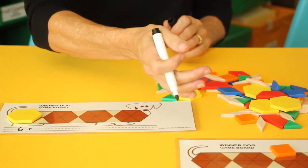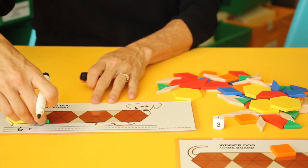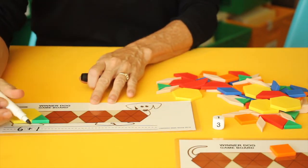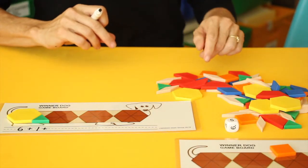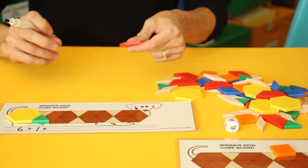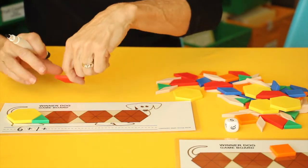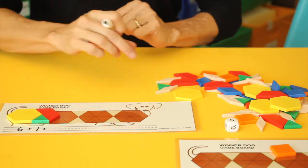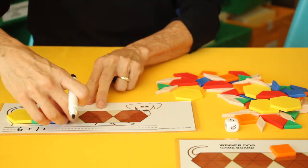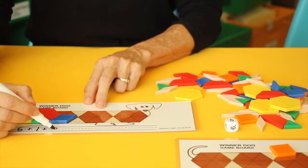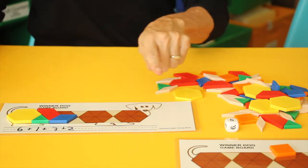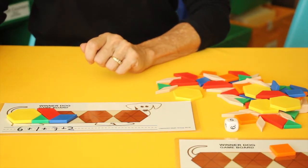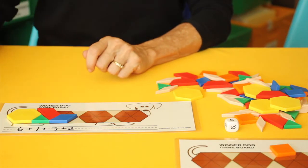Plus, they're going to roll the dice again. They have one, so they can fill it in with one triangle. Plus one. Plus again. They have five this time. So they can use any pattern blocks they want to. So this represents three. And this represents two. So I can write down five. I can also write down three plus two. However they want to do it, as long as they're getting the correct amount covered. So they'll continue making their Winner Dog and keep adding on to their equation.